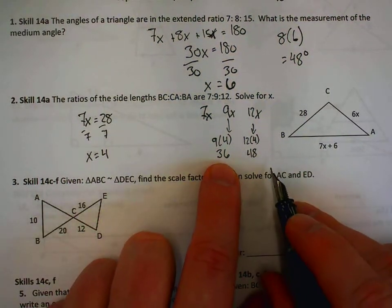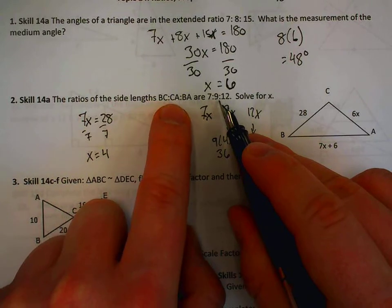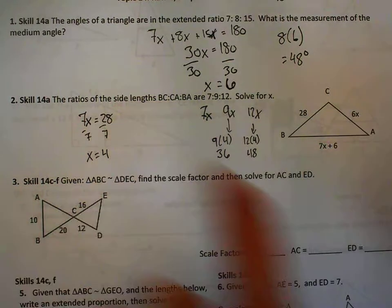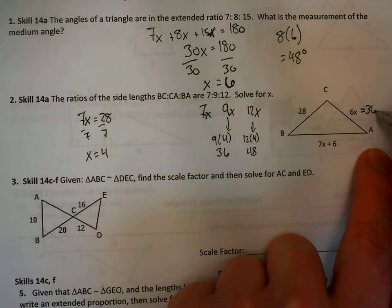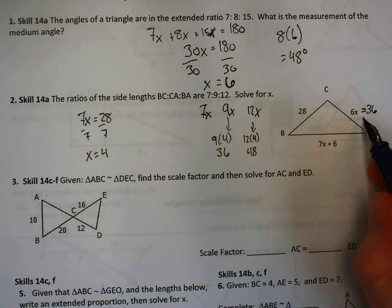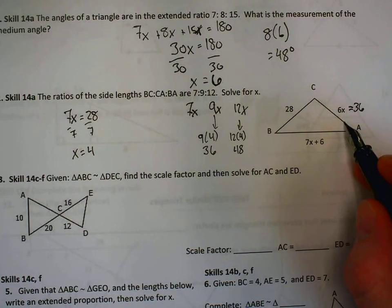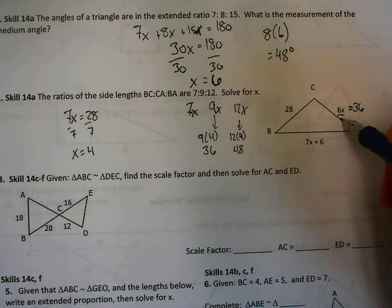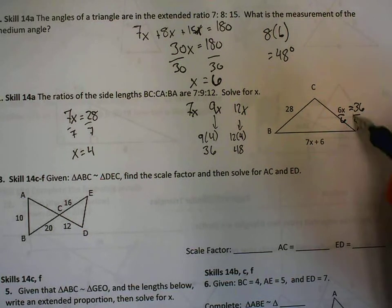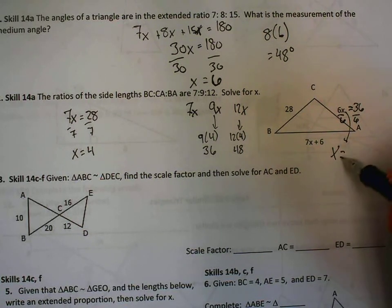That tells me that CA, the side with a ratio of 9, has to be equal to 36. From here, I can just set the side that 6x is equal to 36. Divide by 6 on both sides, and that tells me that this x is 6.